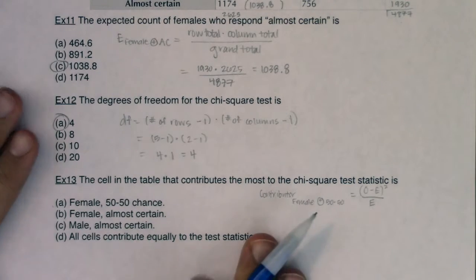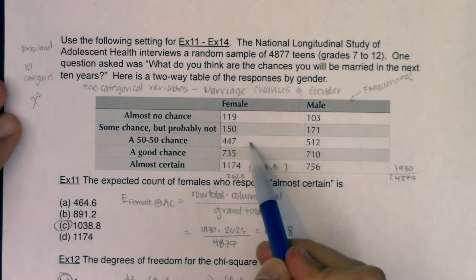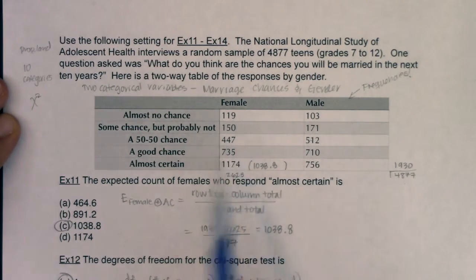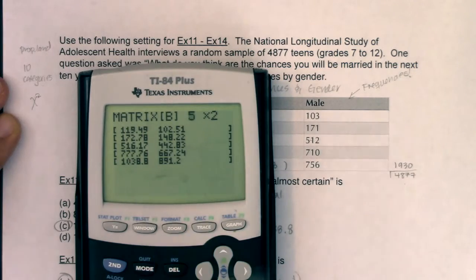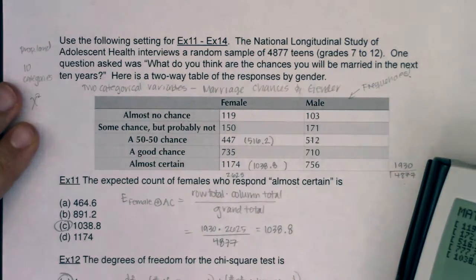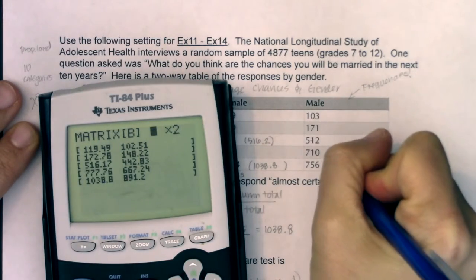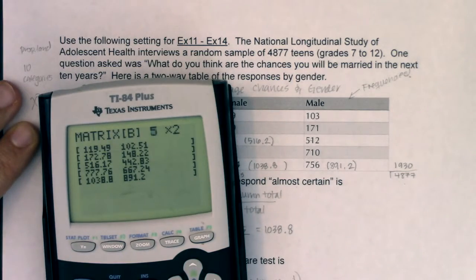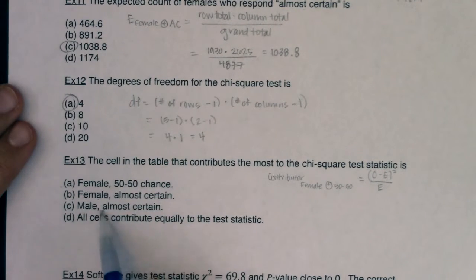Our contributors are always observed minus expected squared over expected. That's the test statistic, at least that's the contributor part. When we add up everybody's contribution, we get the test statistic. So let's look at female and then 50-50. So I want female 50-50. So I'm right here. Now, I don't know what I expected. I see what I observe. So let me go back into the matrix and figure this out. So we'll go here. It looks like I expected 516.2. So let me write that in here, 516.2. And while I'm here, let me just get the other expectants I need. It looks like the answer option in part B was female and almost certain. So let's see, female, almost certain. No, we already had it. And then it was male, almost certain. So that would have been 891.2. So I'm picking those three because those are the three answer options that were presented to me in example 13. So I'm going to see which of these three contribute the most.